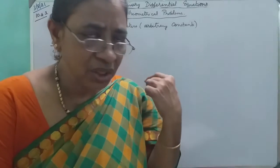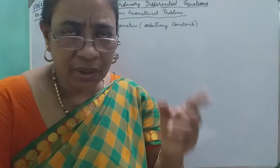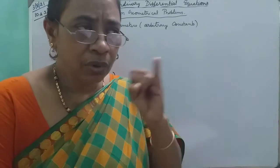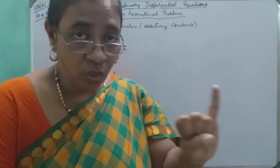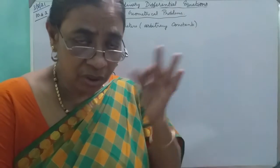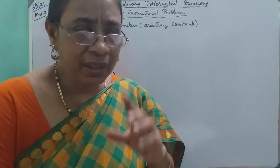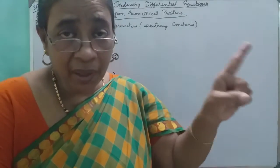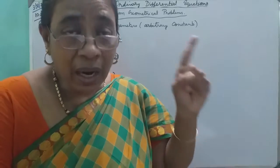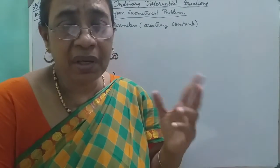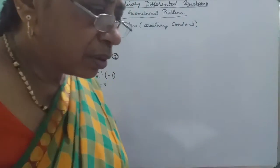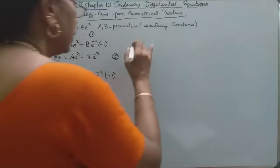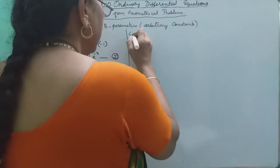Suppose you have two variables, then you differentiate and get two equations. We eliminate the arbitrary constants — finally, the number of arbitrary constants is the order of the differential equation. Now let us see Example 10.2.